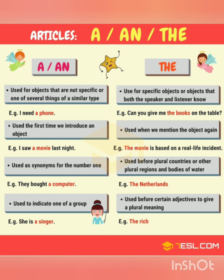Article 'the' is used for specific objects that the reader and listener both know about. It is also used when we mention an object again for the second time, and before plural countries or other plural regions. It is also used to make adjectives into nouns — for example, rich, blind, and poor become 'the rich', 'the blind', 'the poor'.